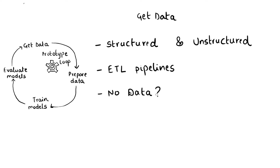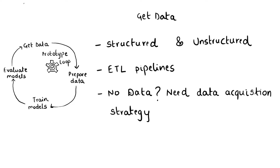When data scientists do not have the data they need, they can get it by scraping websites, purchasing it from data providers, or collecting it from surveys, clickstream data, sensors, cameras, and other sources. The product manager plays a critical role in determining the data strategy and answering questions like what type of data is needed, how much is needed, and how it can be acquired.